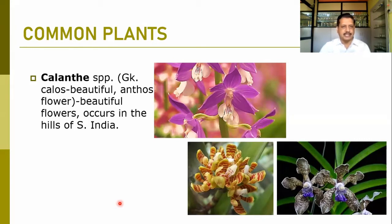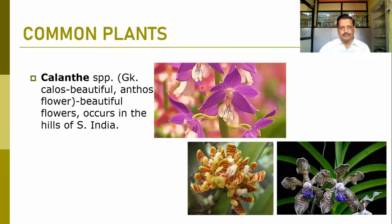The Calanthe species is generally known from the Greek 'kalos' meaning beautiful and 'anthos' meaning flower. So beautiful flowers can be observed here. This is the Calanthe species, and its flowers occur in the hills, particularly in South India.